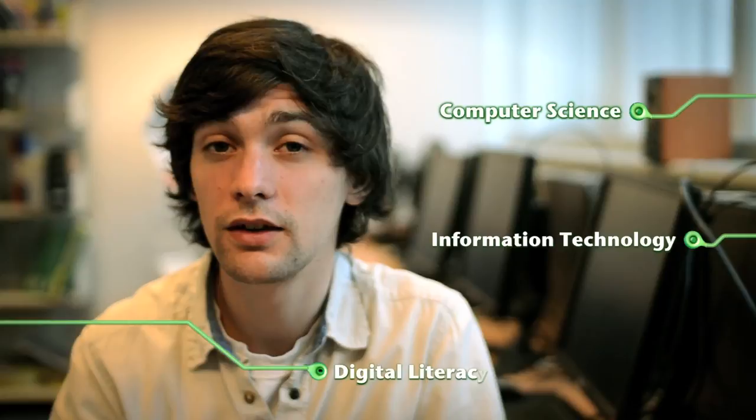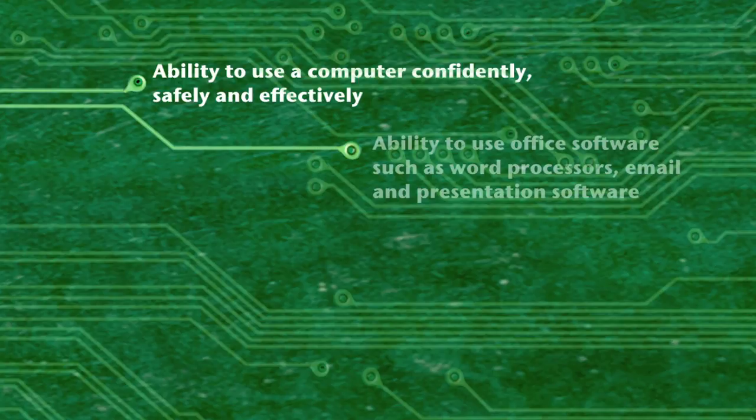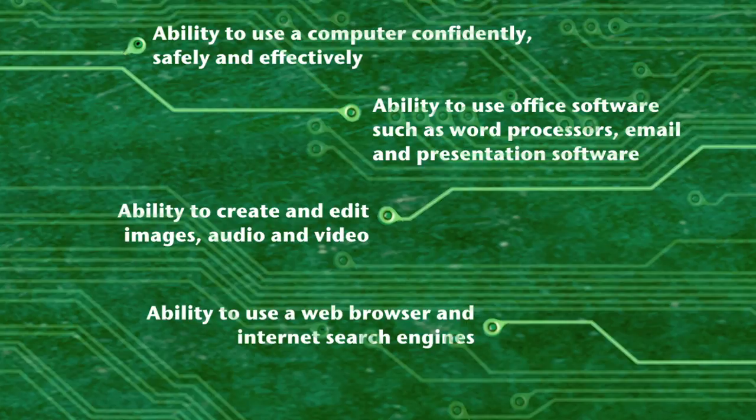The Royal Society published its report in January 2012 and concluded that the curriculum, called computing, should involve three key aspects. Computer science — the understanding of computers and how they work. Information technology — the productive and creative use of technology. And digital literacy, which should be understood to mean the basic skill or ability to use a computer confidently, safely and effectively. This includes the ability to use office software such as word processors, email and presentation software, the ability to create and edit images, audio and video, and the ability to use a web browser and internet search engines. These are the skills that teachers of other subjects at secondary schools should be able to assume their pupils have, as an analogue of being able to read and write.